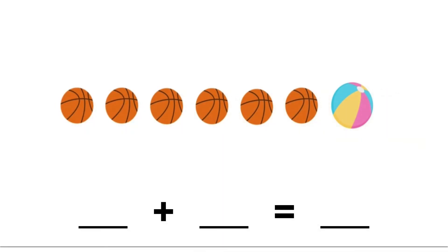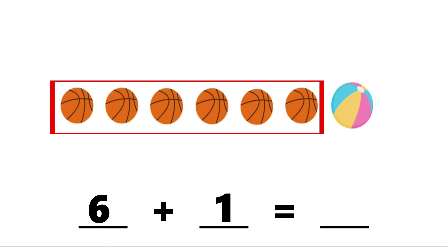Try this on your own. 6 plus 1. 6 is the bigger number, so let's start from 6: 6, 7. So 6 plus 1 equals 7.